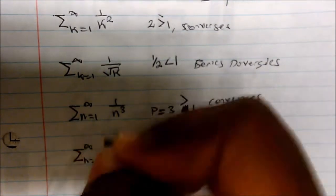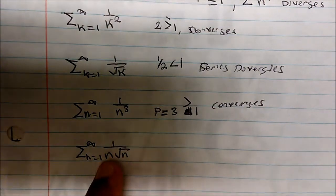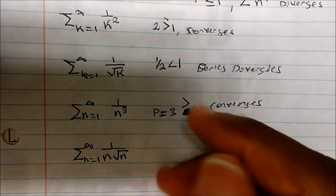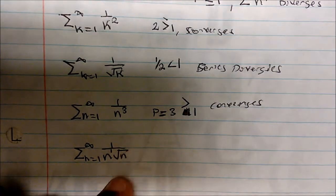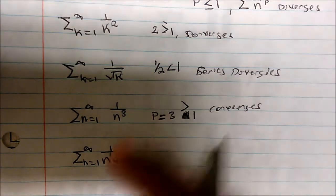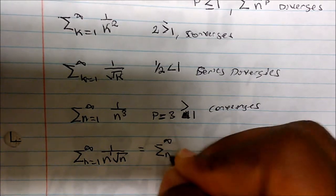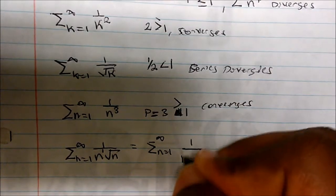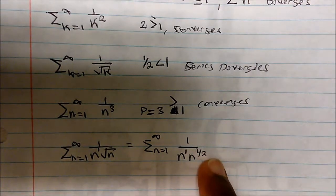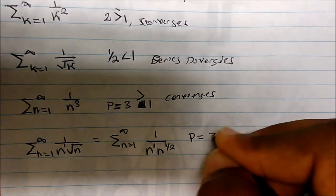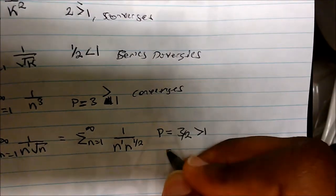What about the sum from n equals one to infinity of one over n times the square root of n? We should recognize that n is n to the first power and the square root of n is n to the one-half power. Since they have the same base, we add the exponents: one plus one-half equals three-halves. So this equals the series of one over n to the three-halves, and since P equals three-halves is greater than one, the series converges.